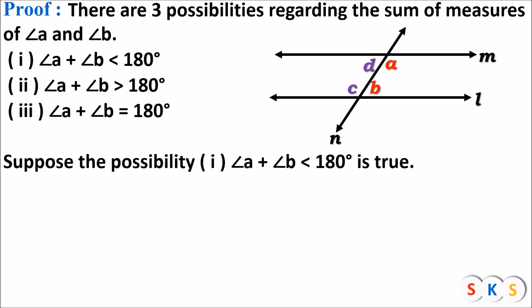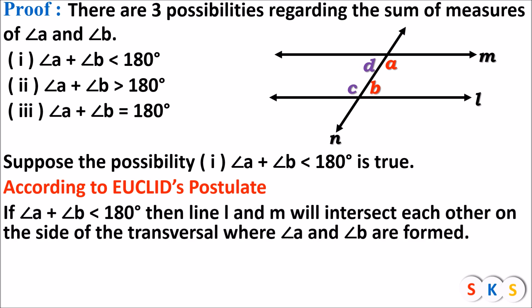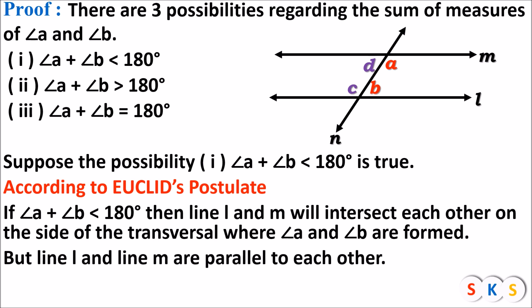Now we will consider that the first possibility is true: angle A plus angle B is less than 180 degrees. According to Euclid's postulate — Euclid was a great mathematician who gave this postulate — he said that if the sum of interior angles is less than 180 degrees, then the lines will intersect each other. So if angle A plus angle B is less than 180 degrees, then line L and line M will intersect each other on the side of the transversal where angle A and angle B are formed. But line L and line M are parallel to each other.